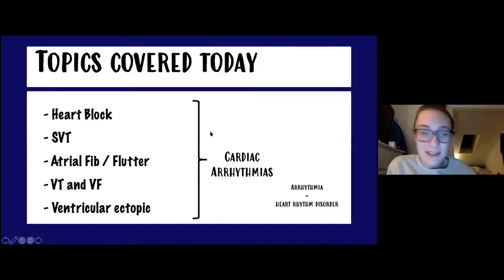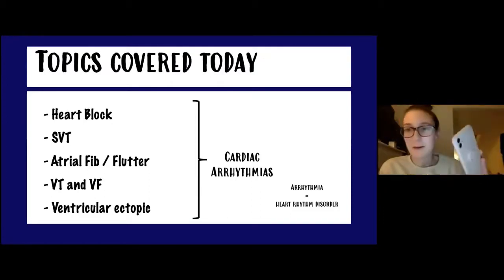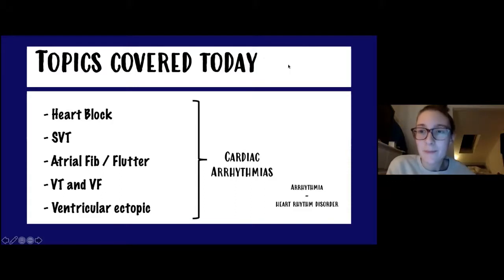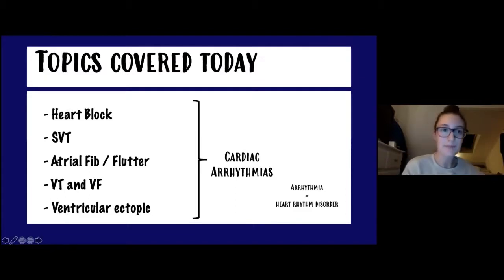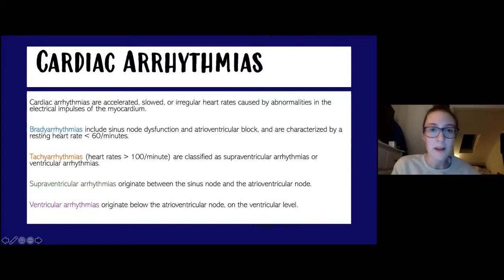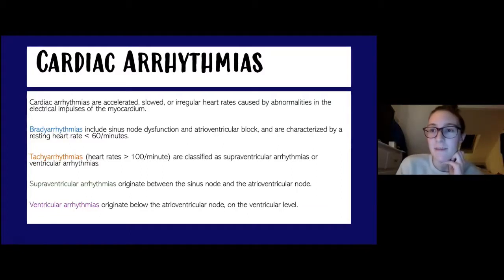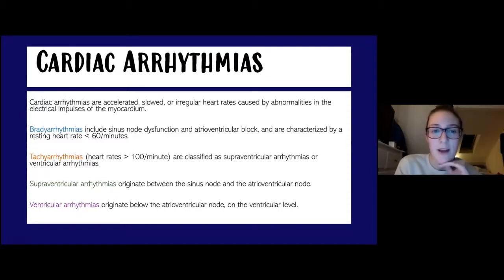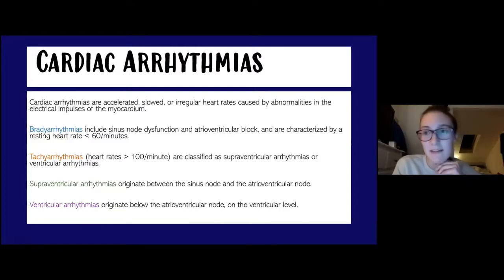Feel free to ask any questions at any point — I've got my phone with the Zoom chat so I'll be able to see your questions. So to start off, just a general overview of cardiac arrhythmias. A cardiac arrhythmia is anything that's an irregular rhythm. It can be described as a bradyarrhythmia or a tachyarrhythmia — fast or slow. Bradycardia is defined as less than 60 beats per minute and a tachyarrhythmia is above 100 beats per minute.